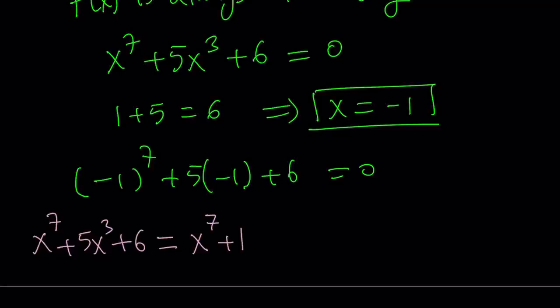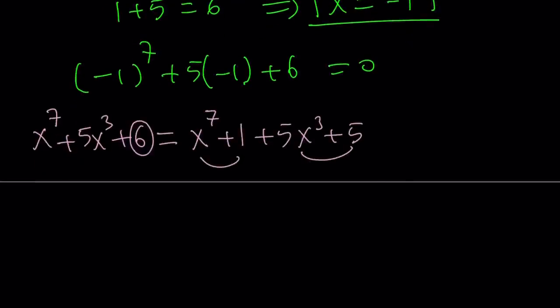But we know x equals negative 1 is a solution, so I can write this as x to the 7th plus 1. So kind of like, I'm going to split up the 6, and that makes sense, because 6 can be written as 1 plus 5. And when I do that, you can immediately see that this can be factored by grouping.